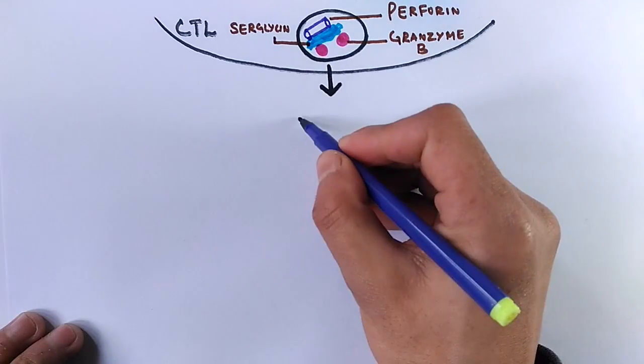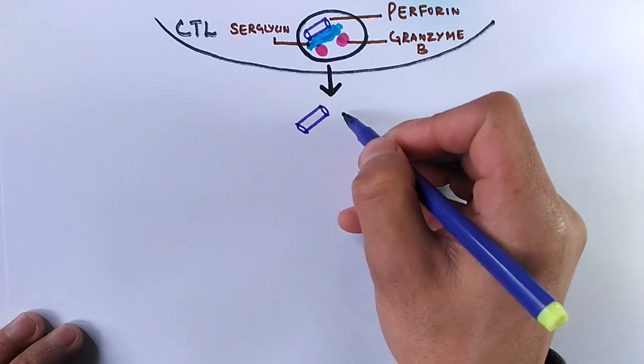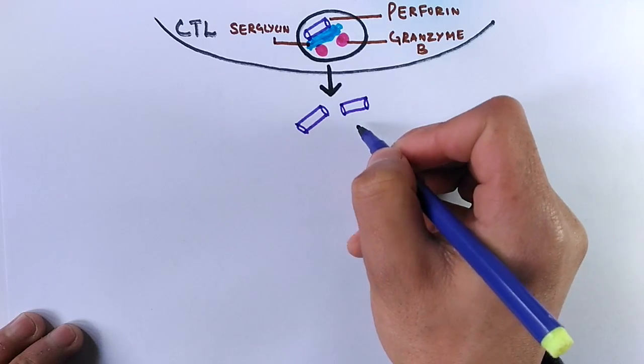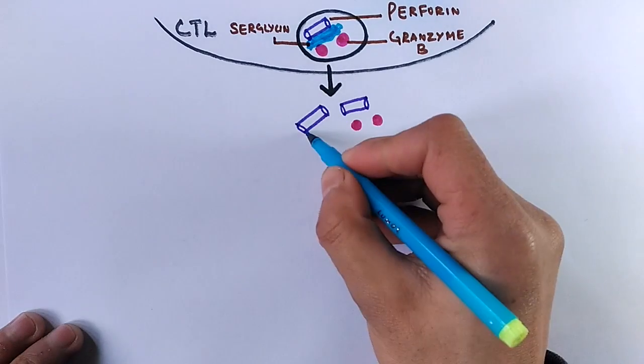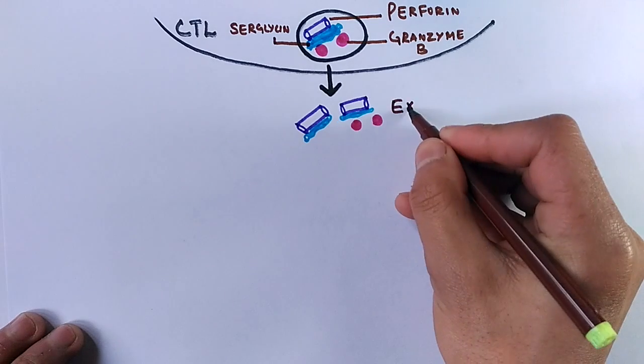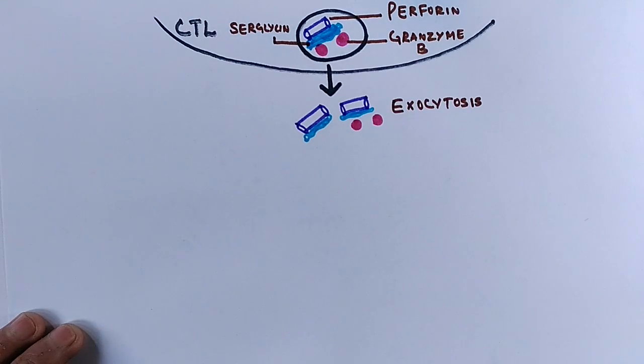So we see here by the process of exocytosis, these molecules make their way out of the cell. This Seriglysin molecule, you can see, is bound to the Perforin and it only gets activated when it detaches from the Perforin.